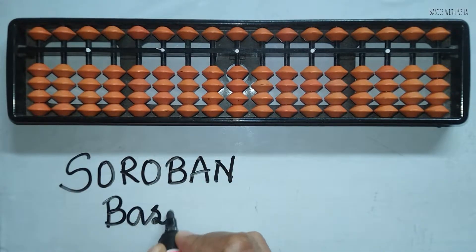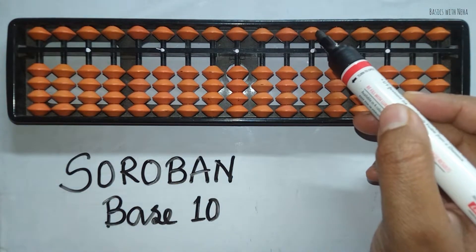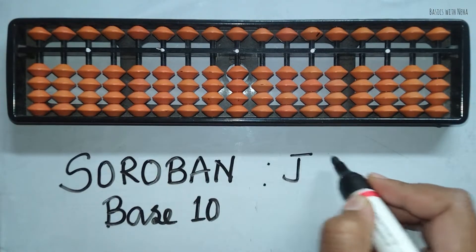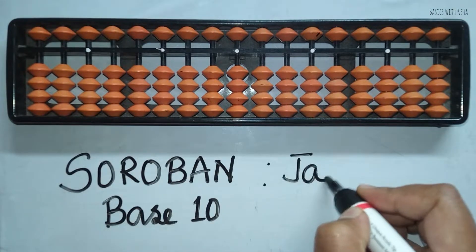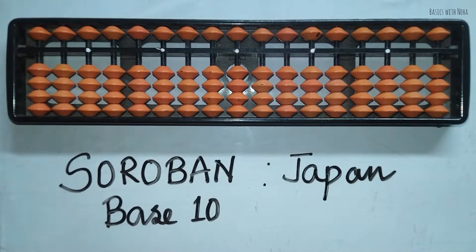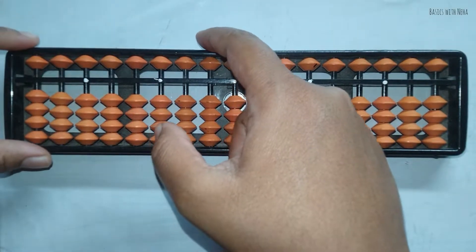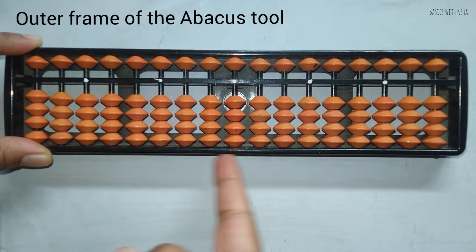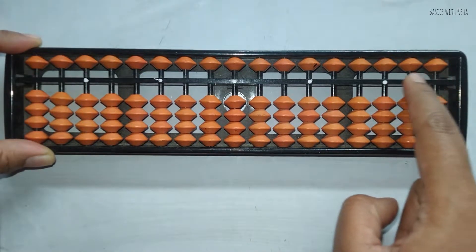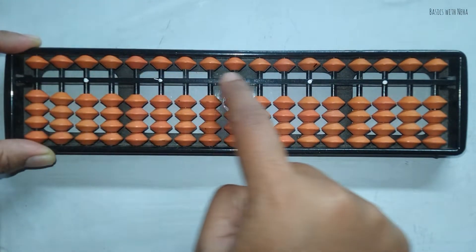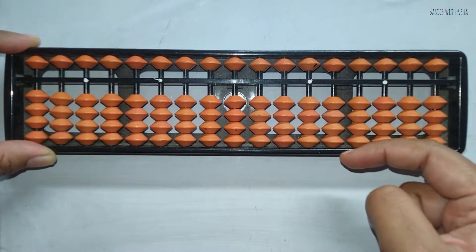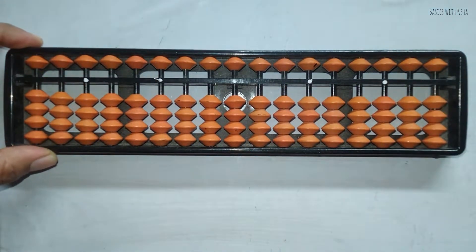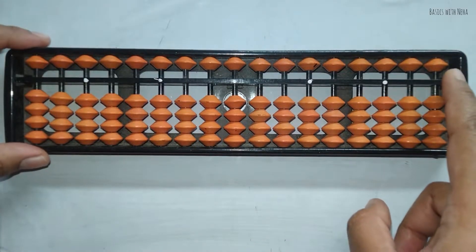Working on base 10 means we have one upper bead and four lower beads. This abacus is a Japanese make — it is from Japan. Now let's see the parts of the tool. The outer boundary is called the outer frame of the abacus tool. The center black bar dividing the upper and lower beads is called the middle bar. The middle bar is also called the equal-to sign — just like we write 2 plus 2 equals 4, that equals sign is the middle bar.